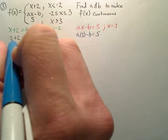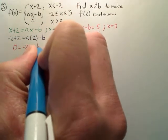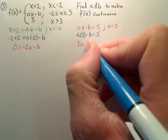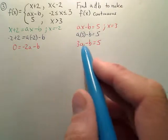And I'm going to solve this, so this becomes 0 equals negative 2a minus b. This one becomes 3a minus b equals 5. Here are my two equations.